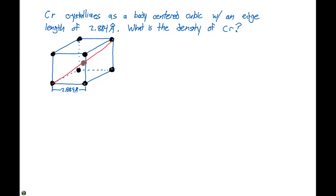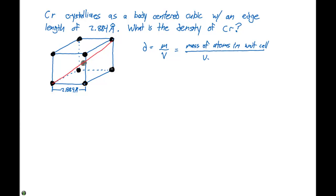If we think about what density is, density is equal to the mass divided by the volume. We can rewrite this to say that this is the mass of the atoms in the unit cell divided by the volume of the unit cell.